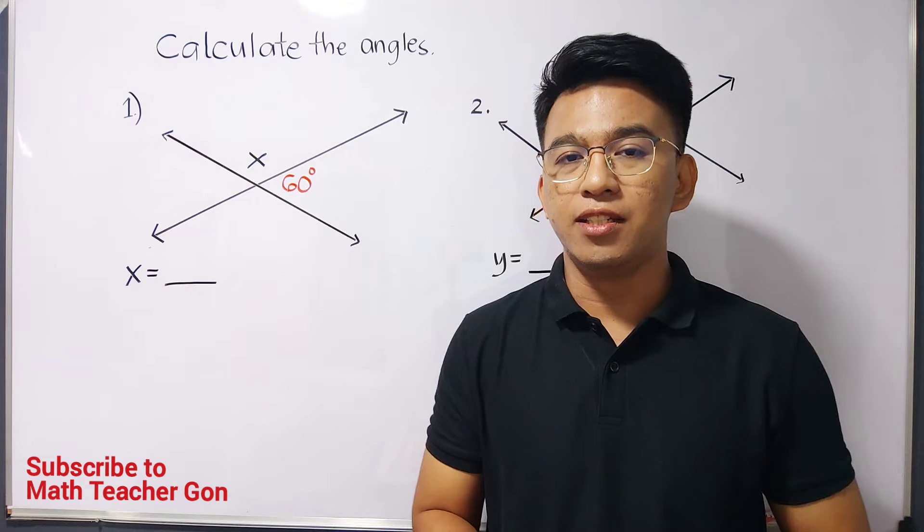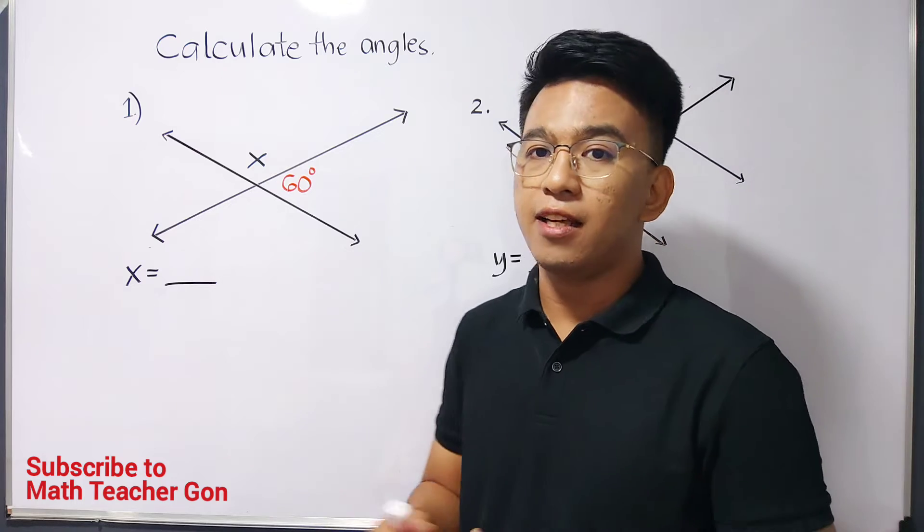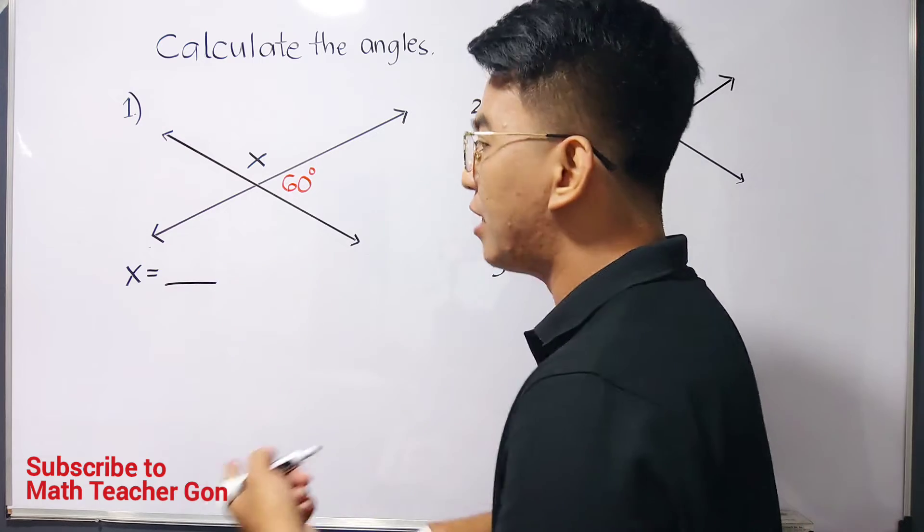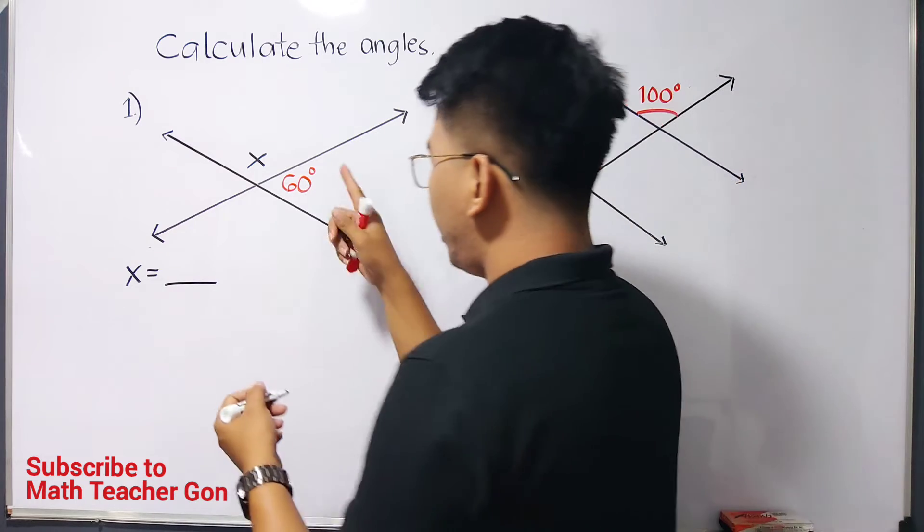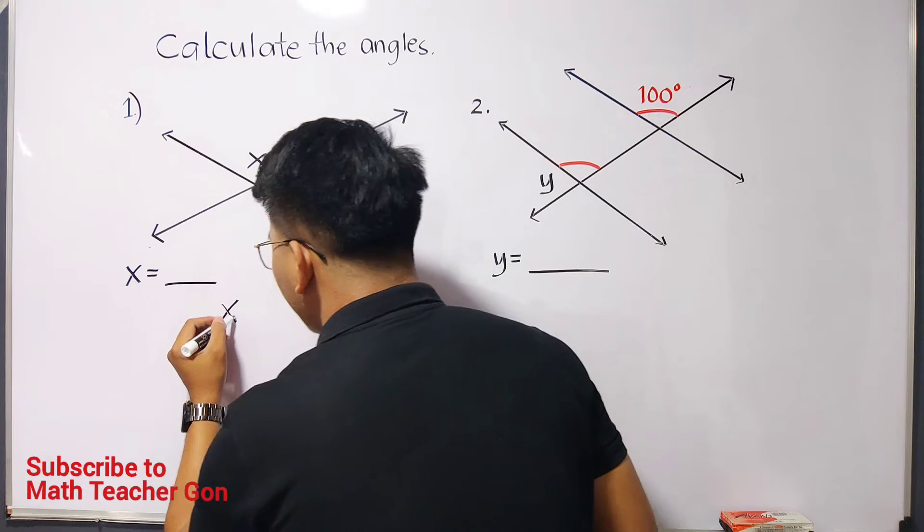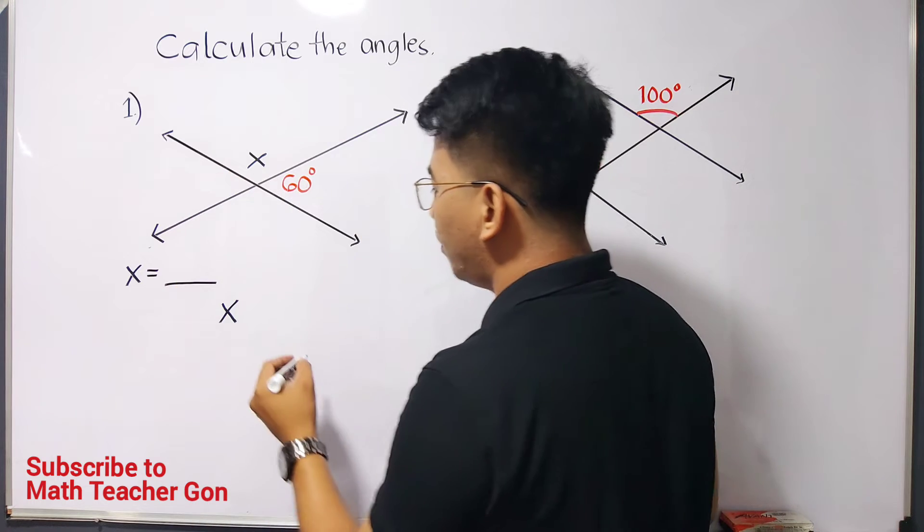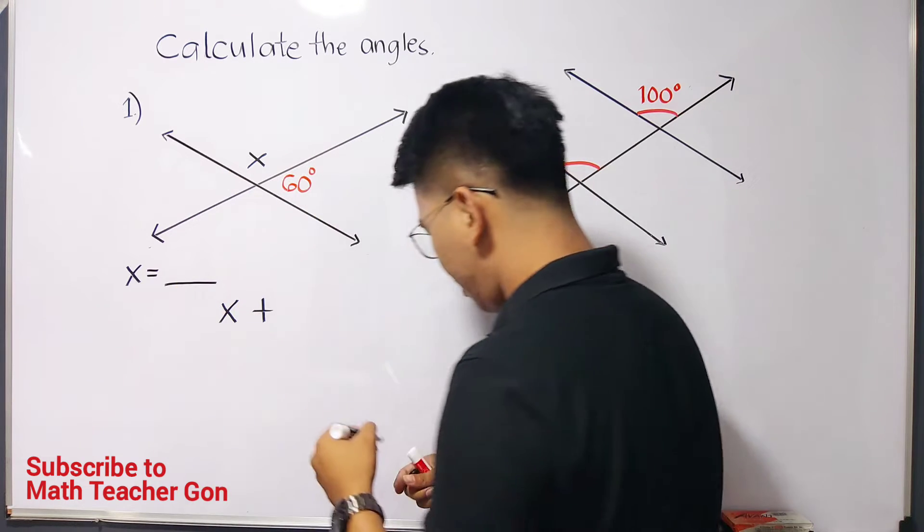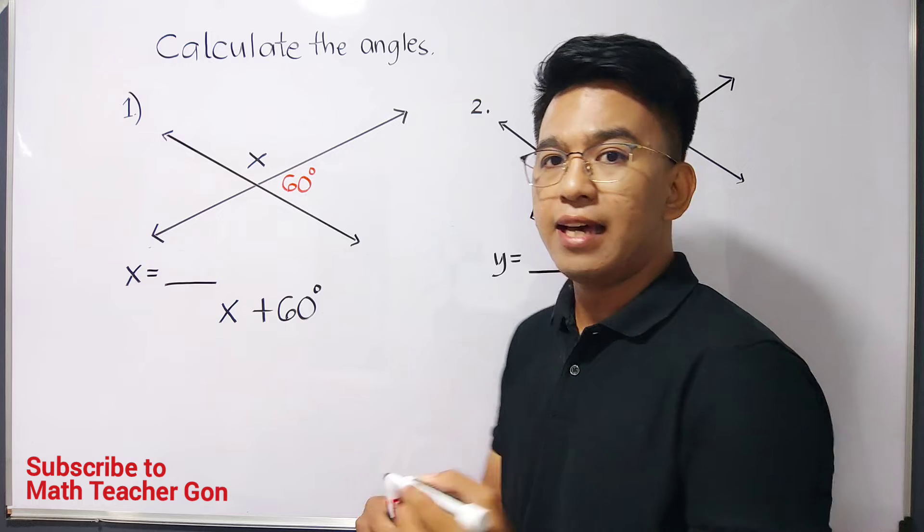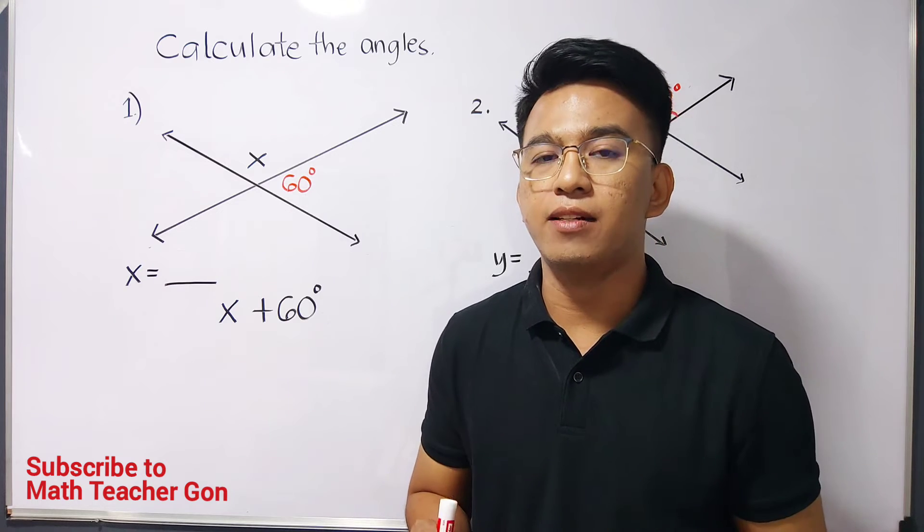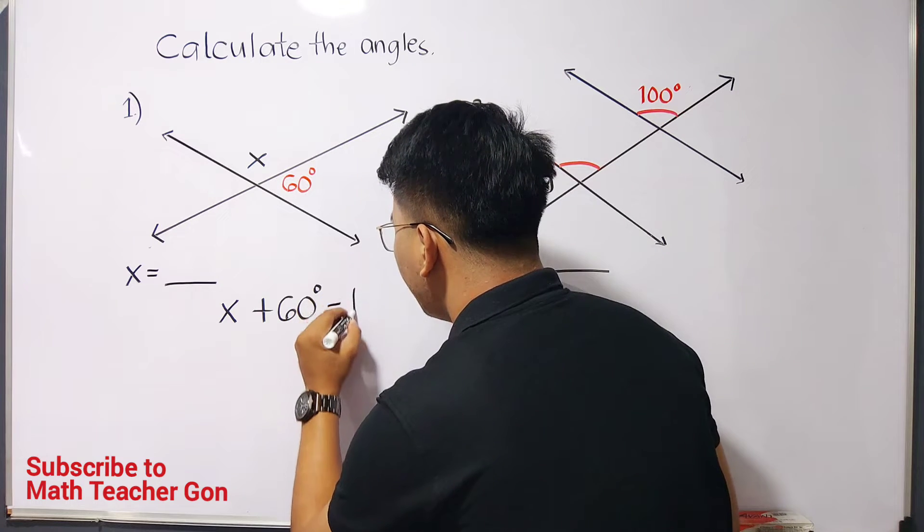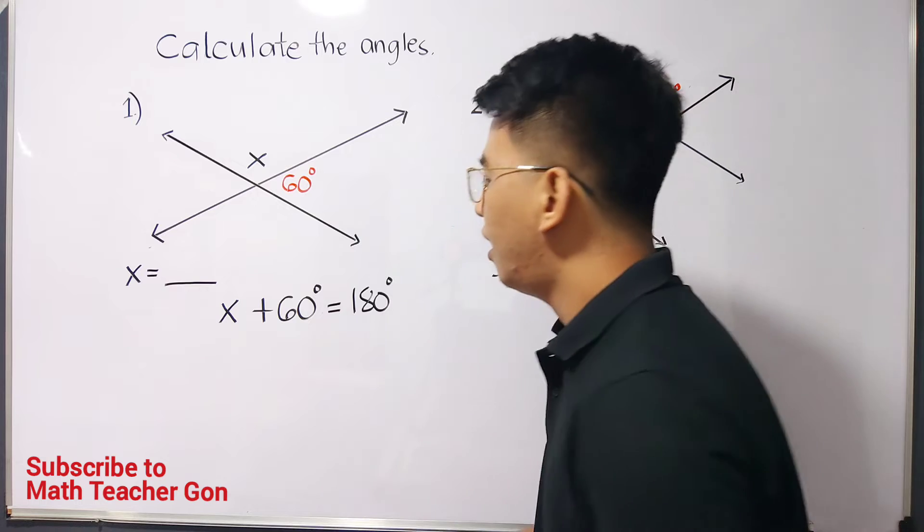So to finally calculate this kind of figure or to easily find the value of x, what we need here is to form an equation. That equation will look like this. You have here x representing your first angle plus your second angle which is 60 degrees. And remember that they are supplementary angles. Meaning, their sum is equal to 180 degrees.